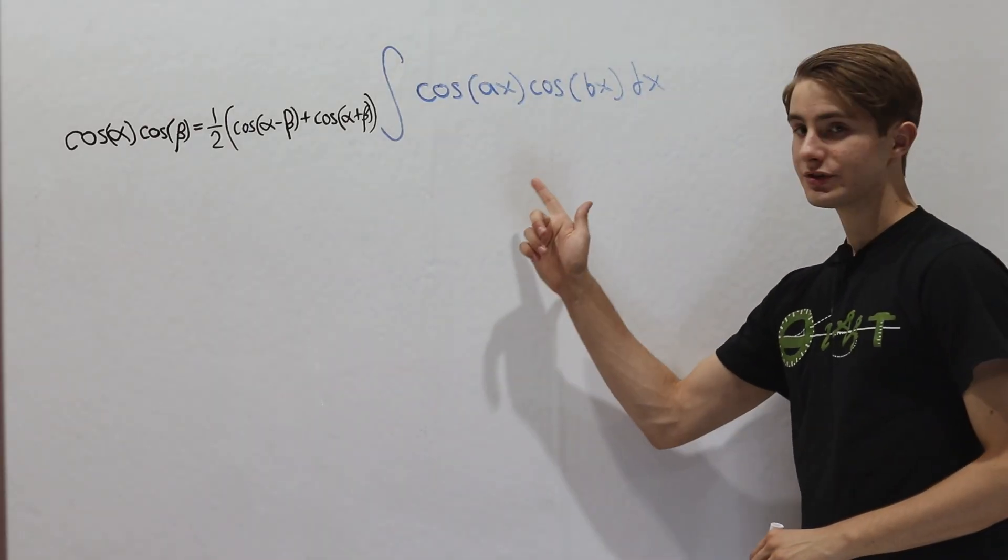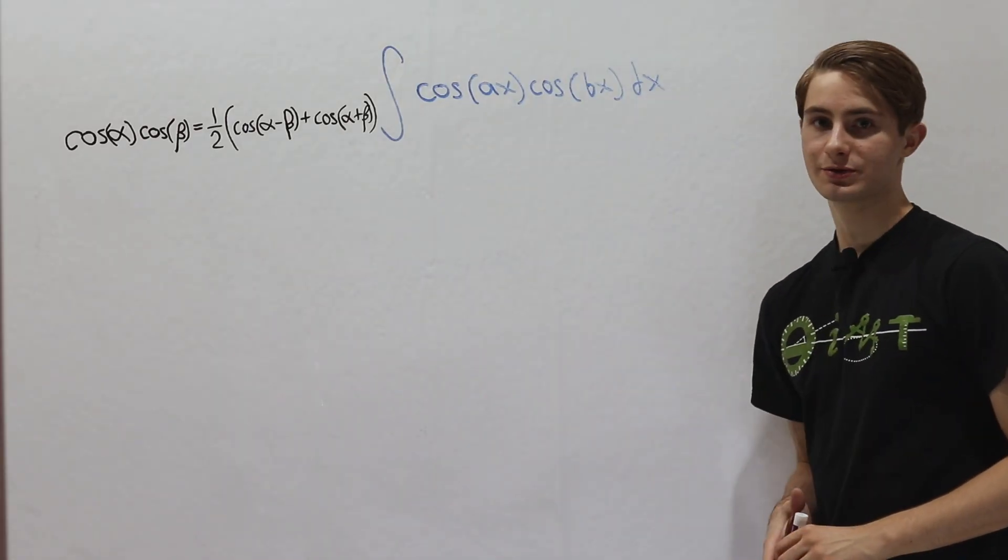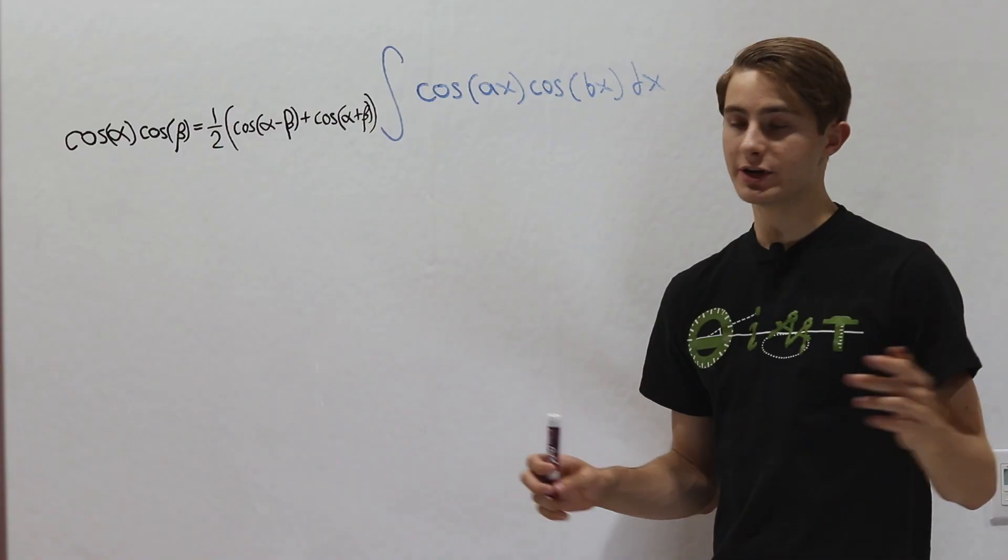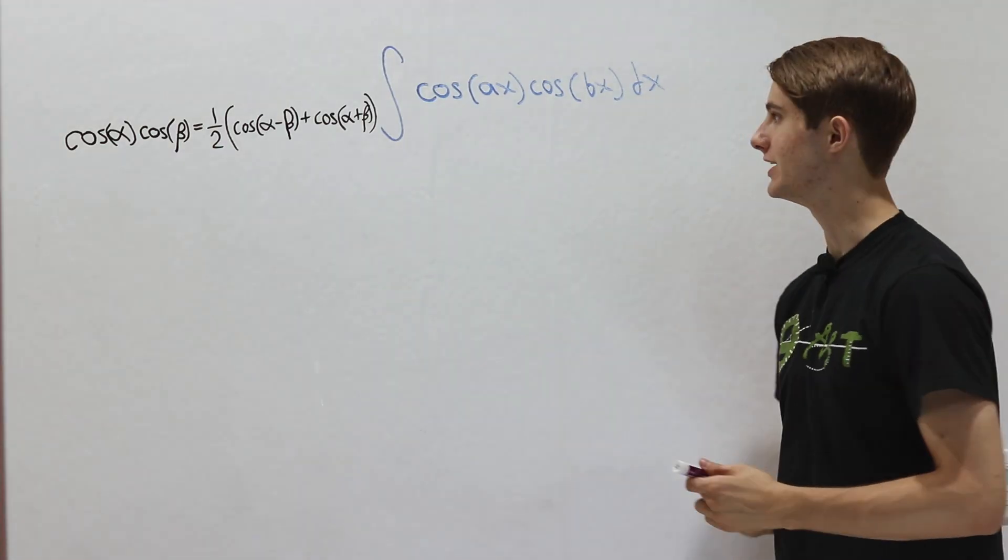We are going to do the integral of cosine ax cosine bx with respect to x without using integration by parts because we have the product to sum formulas to help us out.